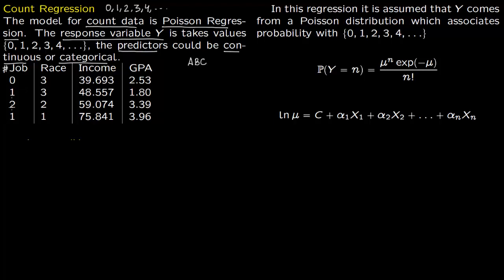The data is about the jobs offered — this is the number of jobs offered. The predictors are the race of the student, income of their parents, and the GPA of the student. For example, a student whose race is 3, whose parents' income was $39,693 (we are dividing income by $1,000 to scale it), and GPA is 2.53 — that person was offered 0 jobs. Row 2: race 3, income $48,557, GPA 1.8 — this person was offered 1 job. Another person: race 2, income $59,074, GPA 3.39 — offered 2 jobs. Another: race 1, income $75,841, GPA 3.96 — offered 1 job.